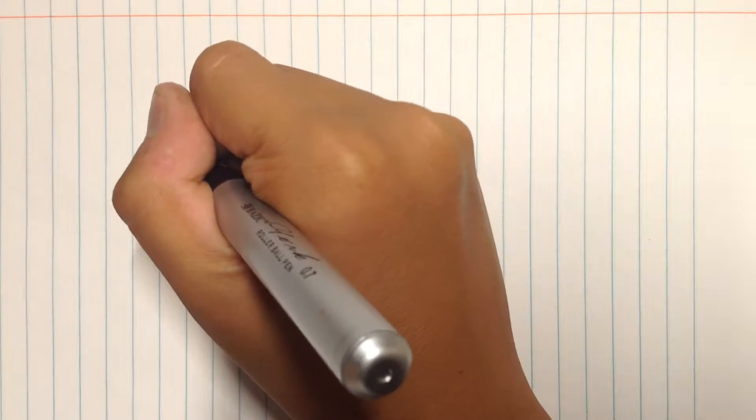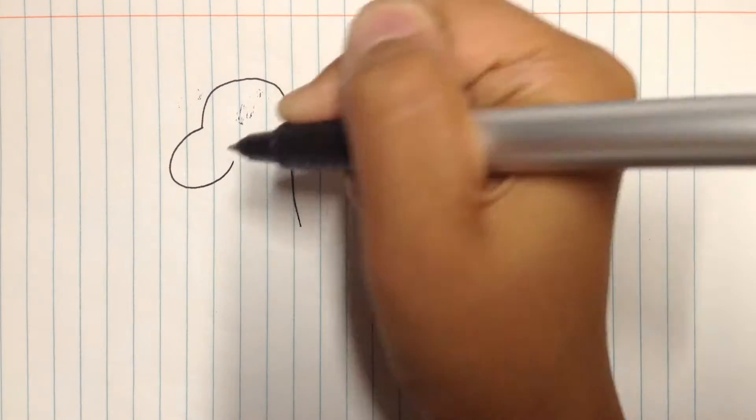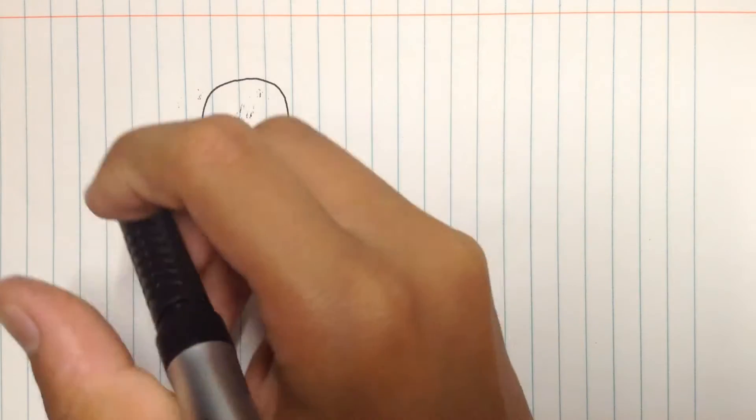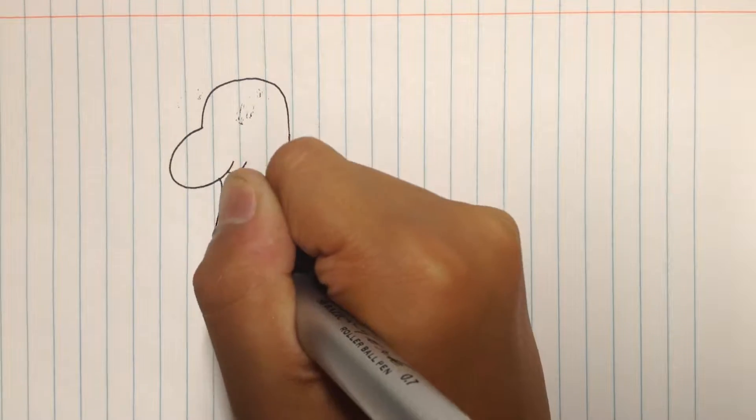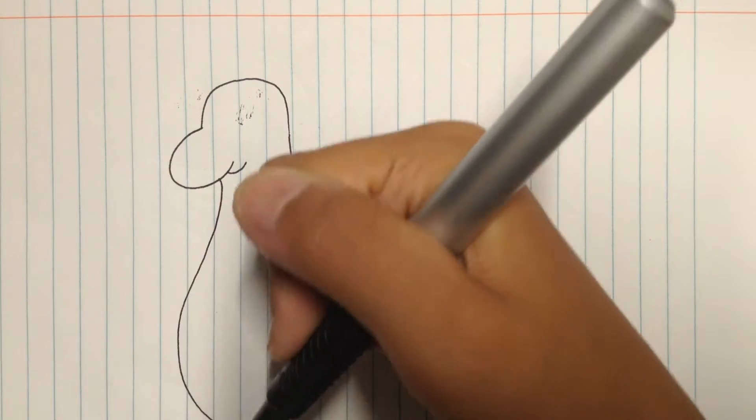Then I make a curved mouth shape, like that. Then I make another part. After that, I make the neck and his big belly.